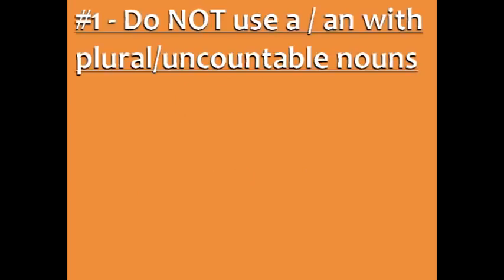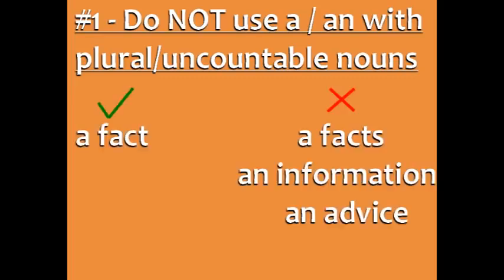Number one: do not use a or an with plural or uncountable nouns. For example, 'a fact' is correct because 'fact' is singular, but you can't say 'a facts' because 'facts' is plural. 'An information' and 'an advice' are also incorrect because information and advice are uncountable nouns.